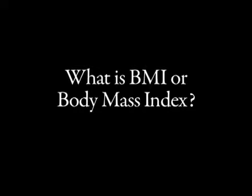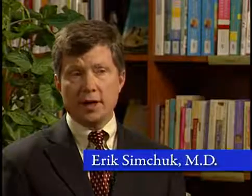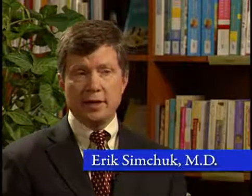Body mass index is obtained by dividing a person's weight by their height squared. That can be either in kilograms or in pounds, using inches or centimeters for the denominator. Height squared allows us to determine a person's body surface area, and basically you're dividing a person's weight by their body surface area, which determines their body mass index.